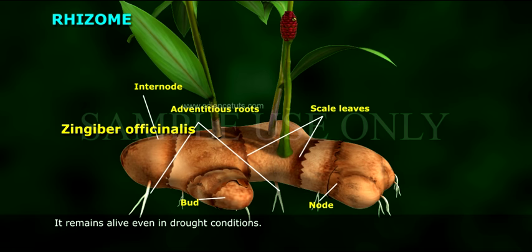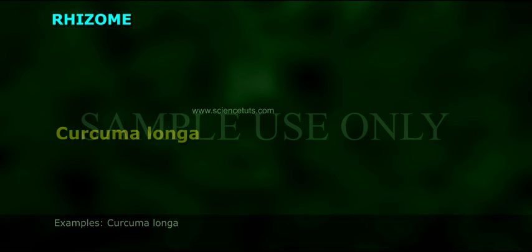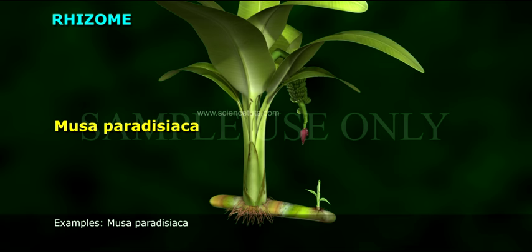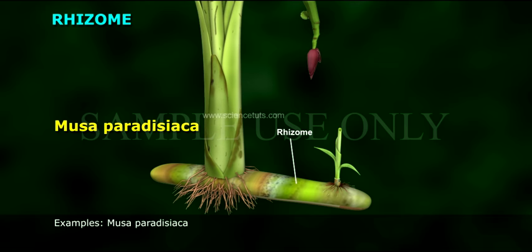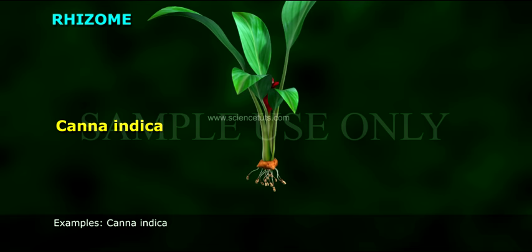It remains alive even in drought conditions. Examples of Rhizome: Zingibar officinalis, Curcuma lunga, Musa paradisica, and Canna indica.